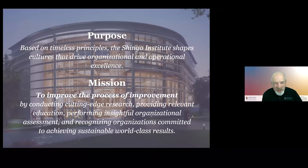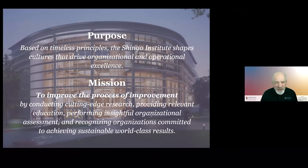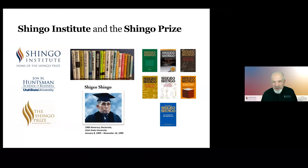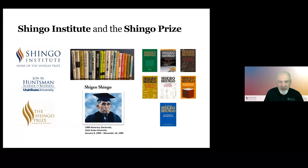The mission statement of the Shingo Institute is to improve the process of improvement. We do that by conducting research, creating educational materials, and doing assessments such as the Shingo Prize assessments. As part of that assessment process, we also recognize organizations committed to achieving world-class results. We are a program of the John M. Huntsman School of Business at Utah State University. We started in 1988, named after Shigeo Shingo, who received an honorary doctorate from Utah State that year, and at that time we asked his permission to use his name to start the Shingo Prize.